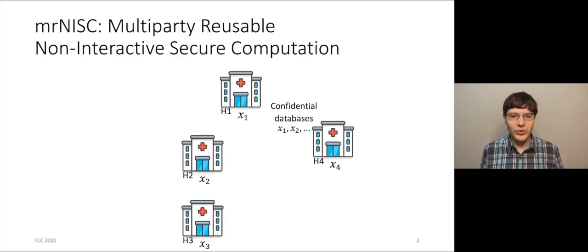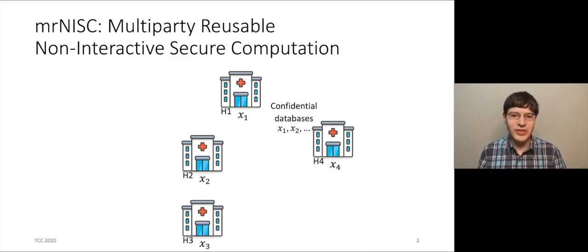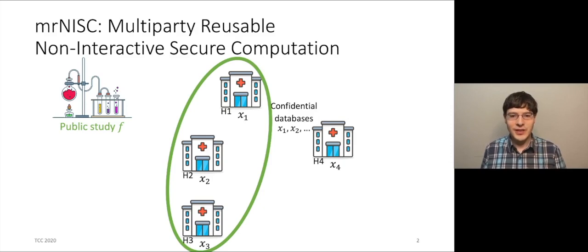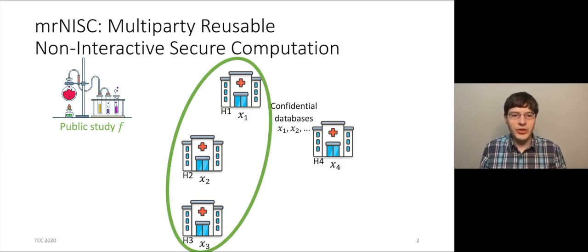Let's start with a model. Suppose that you have four hospitals H1, H2, H3, H4 with confidential databases of medical records X1, X2, X3, and X4. And suppose that you have a Research Institute which wants to conduct a public study F on the records of H1, H2, and H3. By a public study F, I mean just a function F on the input X1, X2, and X3.